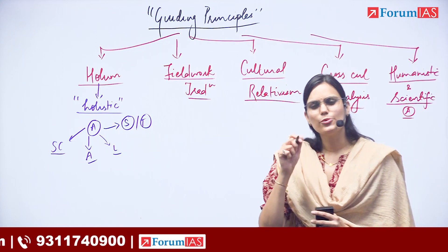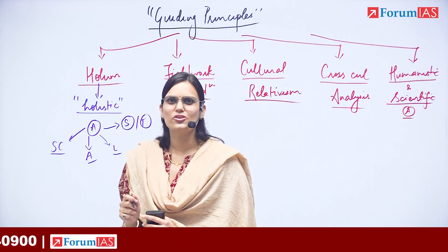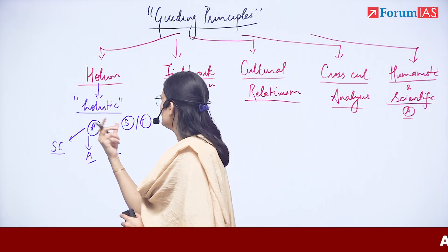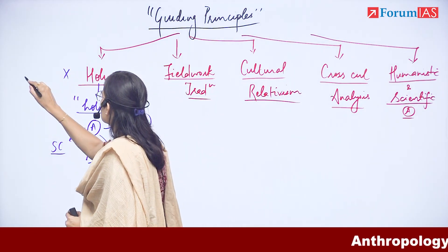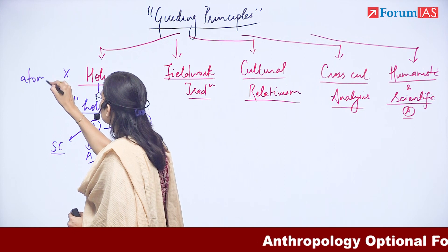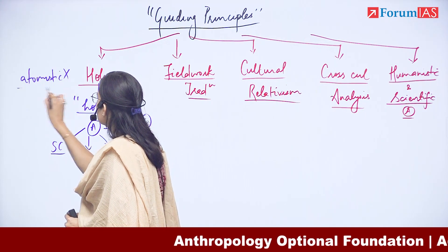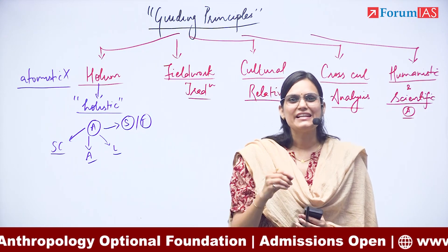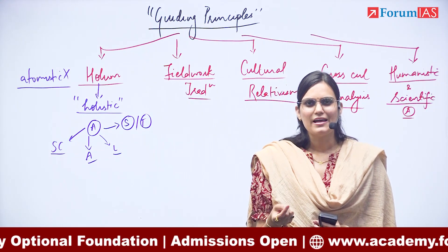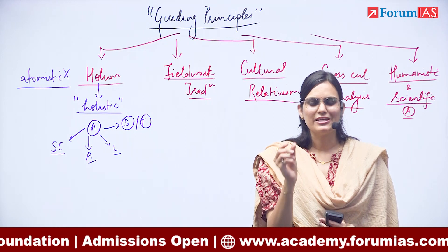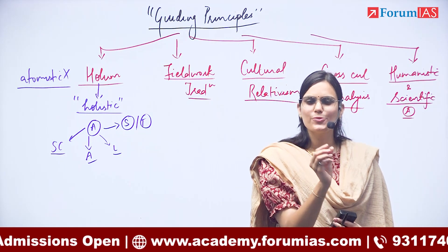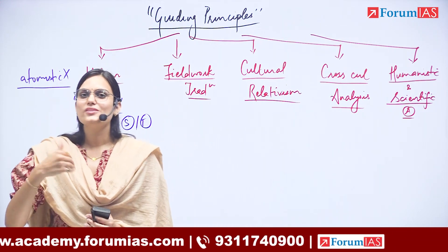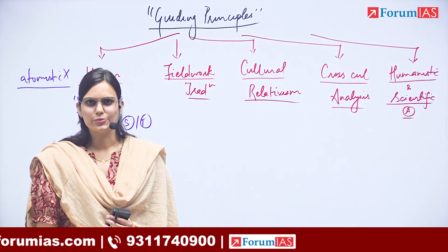Holism is one of the most important paradigms in anthropological research. Its opposite is the term 'atomistic'. Just as an atom is indivisible, an atomistic view is a very narrow view, whereas a holistic view is a very broad view.